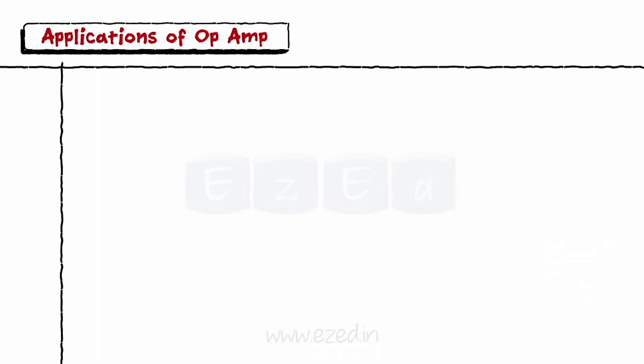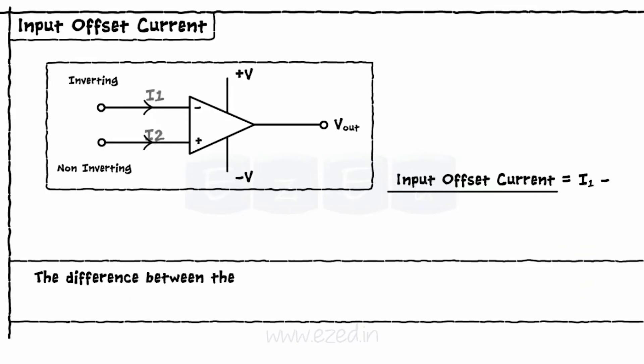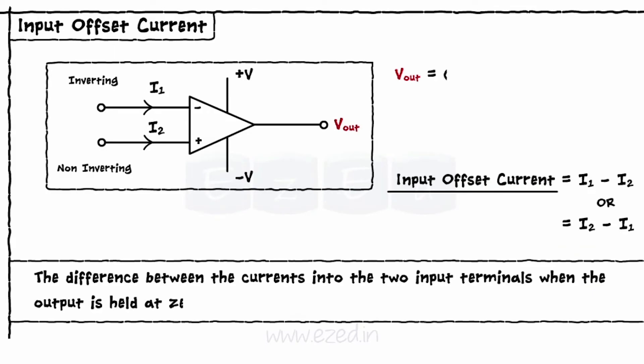The next term is input offset current. The difference between the currents into the two input terminals when the output is held at zero is called input offset current.